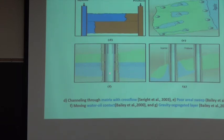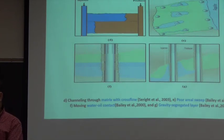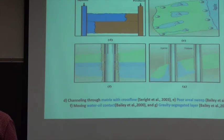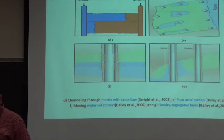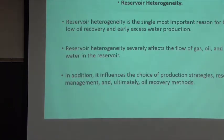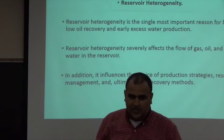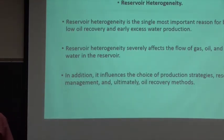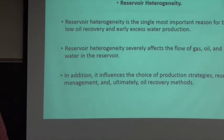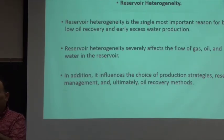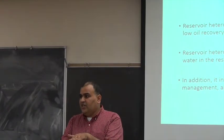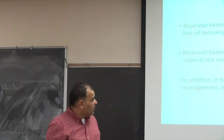Water-oil contact problems can arise from bad well placement - some operators perforate in the water zone and end up producing water. Since we are dealing with fluids of different densities, we also have gravity segregation, which is another reason for unwanted water production. Reservoir heterogeneity is the most important reason for reservoir problems and unwanted water production - you have two layers that do not have the same permeability, and when you inject water, it goes to the high-permeability formation.